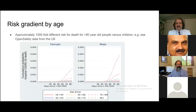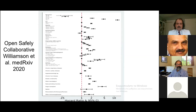Similar data from the OpenSAFELY database in the UK, with millions of people matched against COVID-19 hospital deaths, confirm the very steep difference in risk by age. Comparing children under 18 to people over 80, the difference is about a thousand-fold. We know that not only age but additional risk factors make a big difference in terms of the risk of serious disease and mortality, including approximately a two-fold higher risk in men.